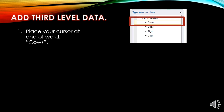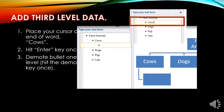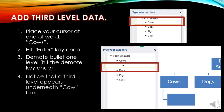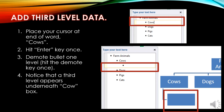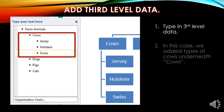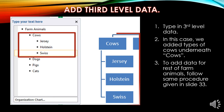Adding the third level. Place your cursor at the end of the word Cows and hit Enter once. Then demote the bullet one level by hitting the Demote key once. A third level appears underneath the Cow box. Type in the third level data — underneath Cows, we typed Jersey, Holstein, and Swiss. To add data for the rest of the farm animals, follow the same procedure. Under Cows we have that list; you will do the same for Dogs, Pigs, and Cats.